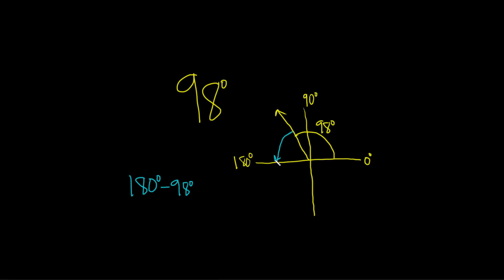Okay, always start here and then all the way to the x-axis. And then I'm just going to use my calculator for this. Let's see, 180 minus 98, I got 82 degrees. So the reference angle for 98 degrees is 82 degrees.